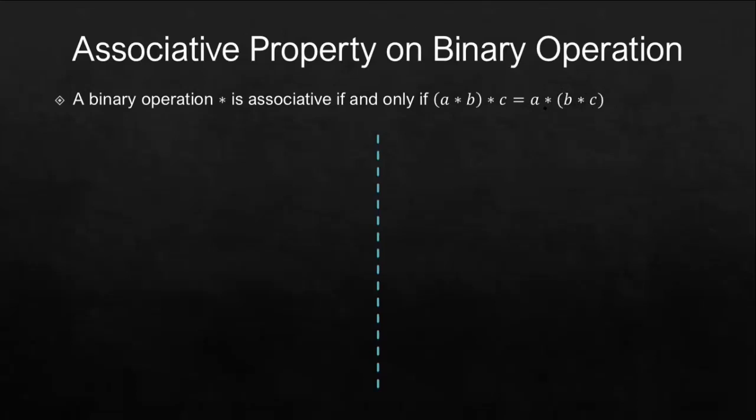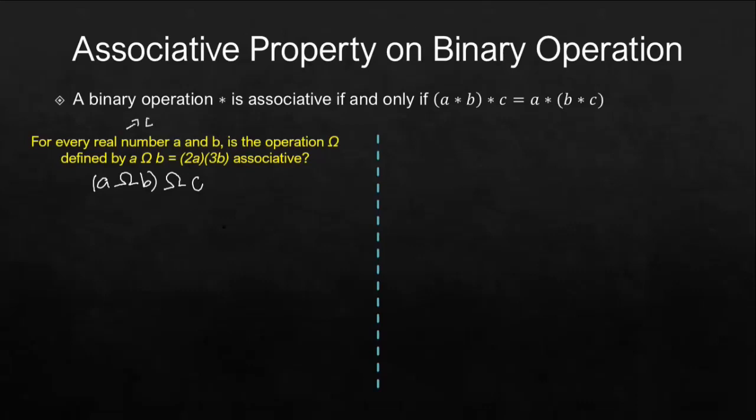To better understand, let's have the first example. For every real number, we have this binary operation omega defined by A omega B equals 2A times 3B. We have to prove if this is associative. Just like what we did in commutative property, we will not be getting numbers as representative for the real numbers. Instead, we will be operating with variables. However, for associative, we will use this equation. We will be dealing with A omega B first. Afterwards, we define a third number which is omega C. We have to take note that C here is also a real number.